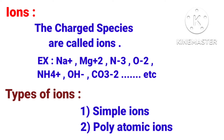Ions are classified into two types: simple ions and polyatomic ions. A simple ion means having one atom with a charge, whereas a polyatomic ion means having more than one atom with a charge. Now, simple ions and polyatomic ions are again each classified into two types.